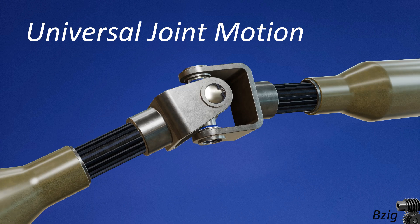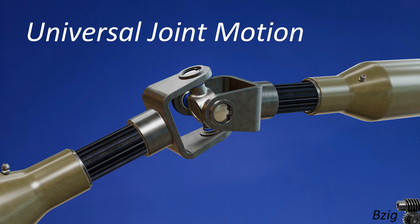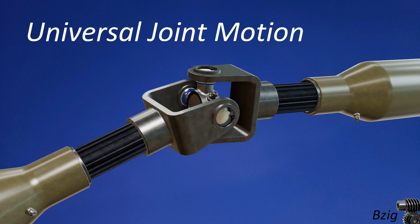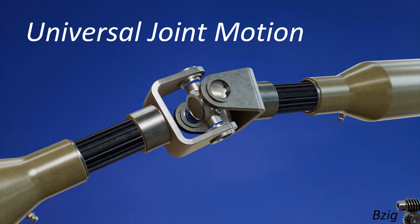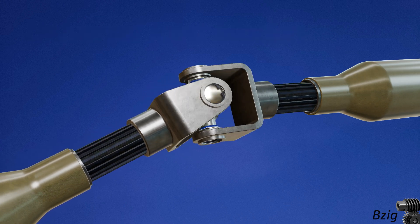This axial misalignment can be built into the design, for example, to connect two machines that are not in line with one another, or the misalignment can be the result of relative motion of two machines. An example of this is providing power to a car axle that bounces up and down on its suspension.